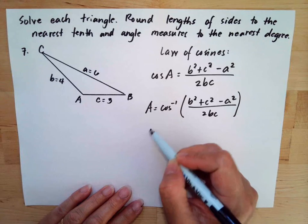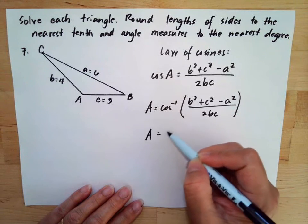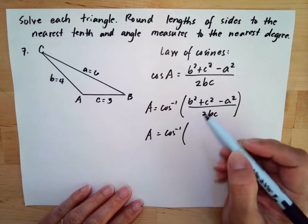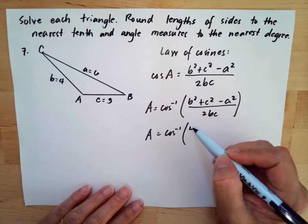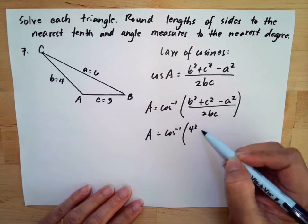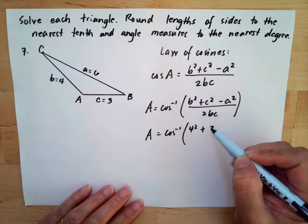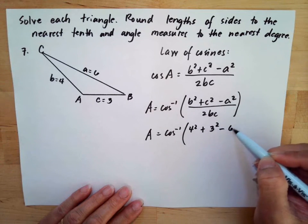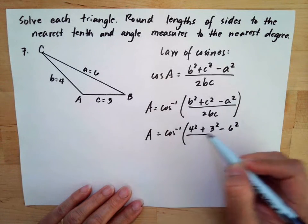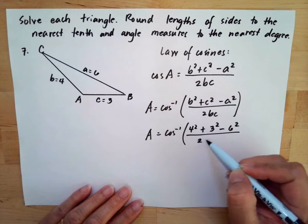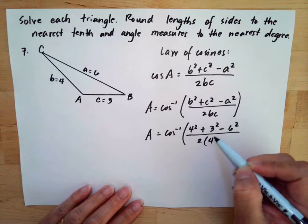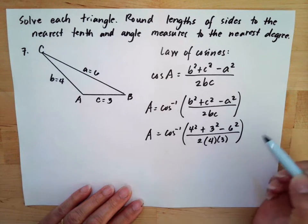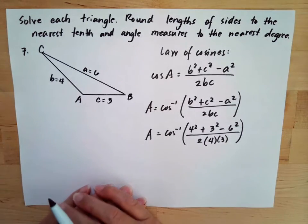Now substitute the given values. B is 4, C is 3, and A is 6. So we have inverse cosine of (4 squared plus 3 squared minus 6 squared) over (twice of 4 and 3).